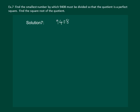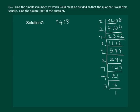Let us prime factorize 9408. After prime factorization we get: 9408 is equal to 2 × 2 × 2 × 2 × 2 × 2 × 7 × 7 × 3.